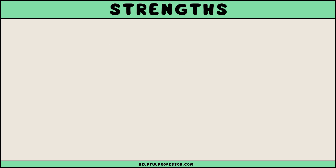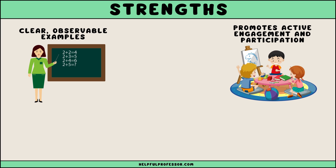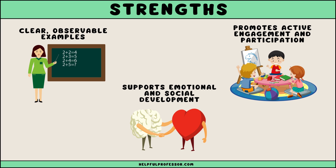There are significant strengths to employing behavior modeling in educational contexts. First, it provides a clear observable example for learners to follow, simplifying complex behaviors into manageable observable actions. This can be particularly effective for learners who may struggle with abstract concepts without concrete examples. Moreover, behavior modeling promotes active engagement and participation, which are critical for deep learning. It also supports the development of non-cognitive skills such as empathy by observing and imitating emotional responses in social interactions.